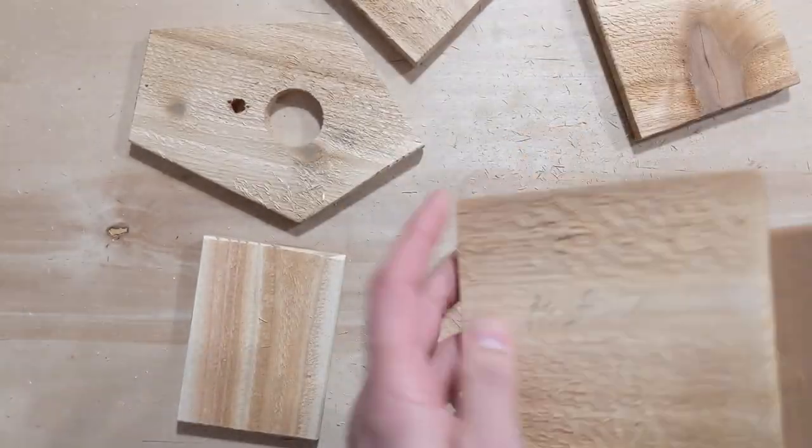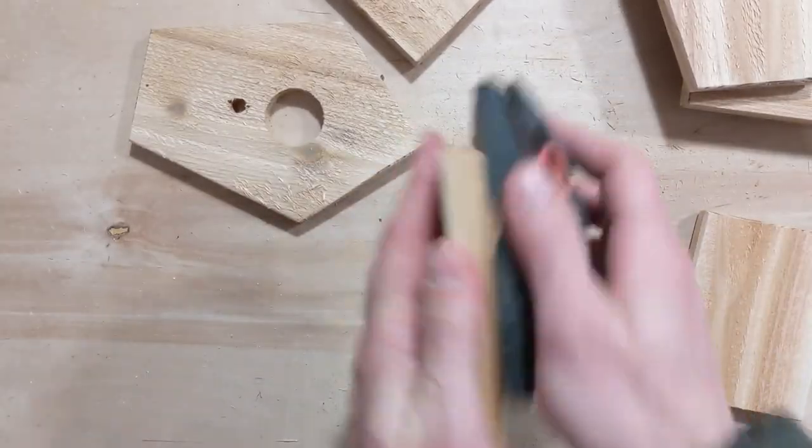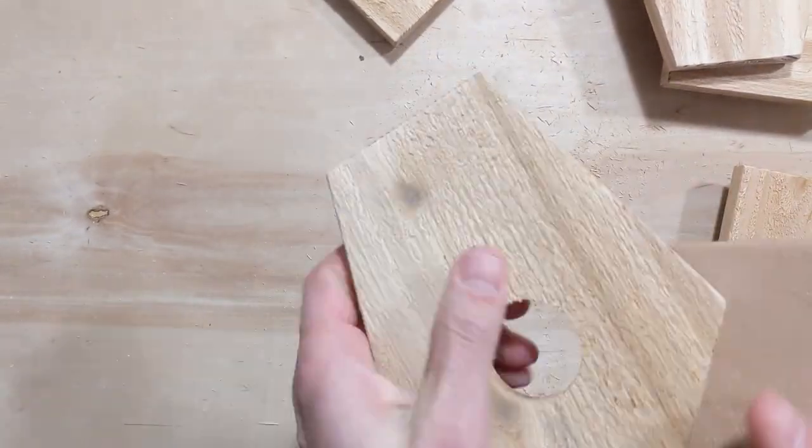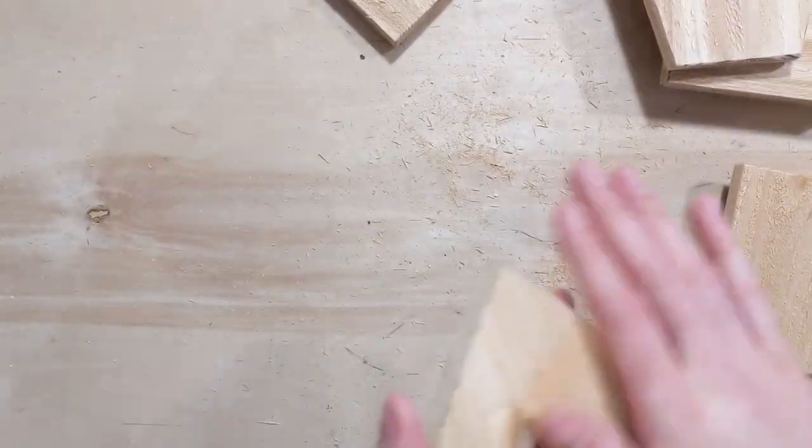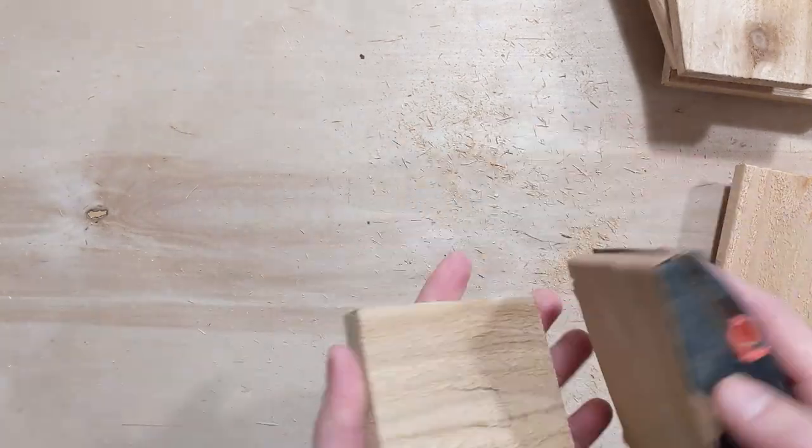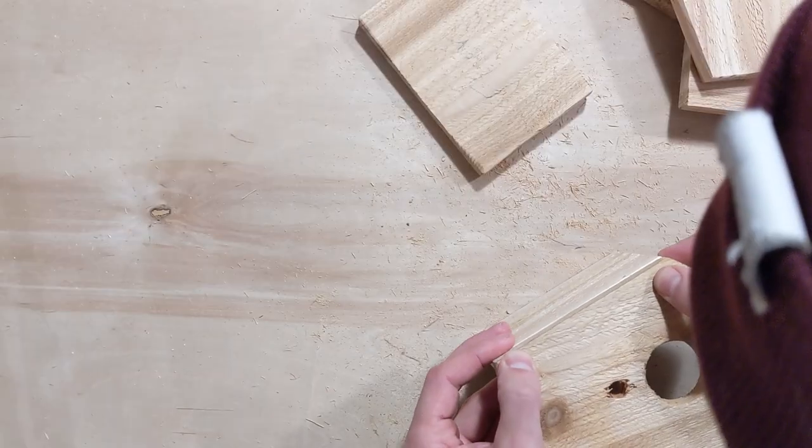Give all the parts a light sanding with 120 grit to get rid of any splintery or stringy bits. Do not over sand. Have your brad nailer handy.